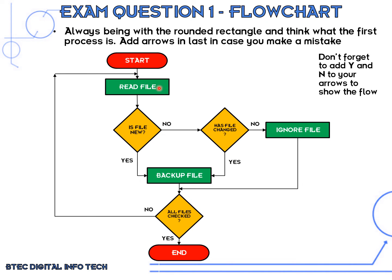So you can see our three processes: read the file, back up the file, or ignore the file. The 'ignore file' step could technically be left out, but it helps explain the flowchart. Once we get past the backup or ignore step, we need a decision: have all files in storage been checked? If yes, we end the flowchart. If no, we go back to the beginning and read the next file. This keeps repeating until all files have been checked. Take your time to read through and follow the arrows, and we'll look at another question to make it clearer.